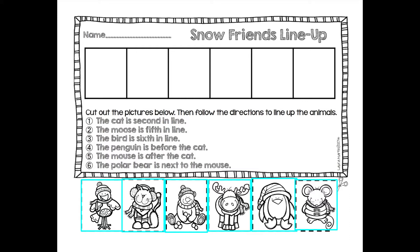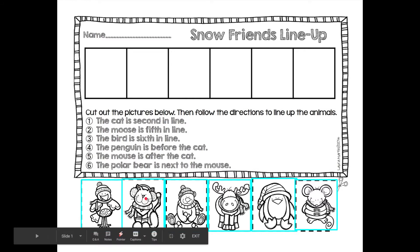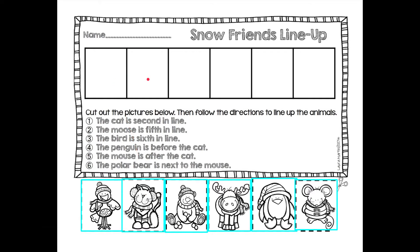So the first direction says that the cat is second in line. So what you need to do is look down at the bottom, look at the pictures of the animals, and you'll see that right here is the cat. Number one said the cat is second in line. So I would take my cat, click on it, and drag it up. This is the first spot, and this is the second spot. So I would need to leave it right here in this box.